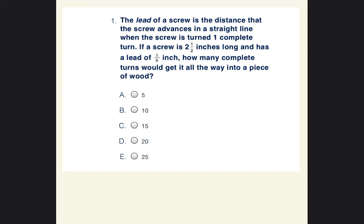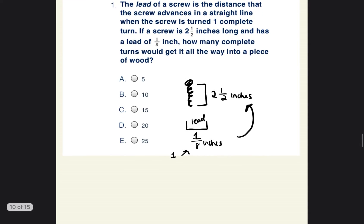Okay, so we have a screw. I'm going to make a little screw, and we know that that screw is two and a half inches long. And then they said there's a lead of one eighth inch. So I'm going to say lead of one eighth inch. And then it says how many complete turns would get it all the way into a piece of wood? So after every one turn, you get one eighth inch. You want to figure out how many turns can be in two and a half inches. So we're going to have to divide.